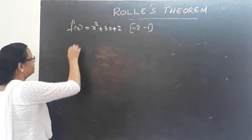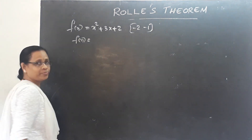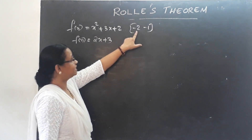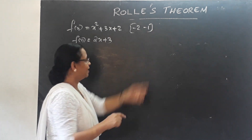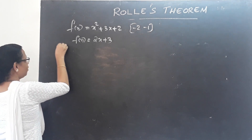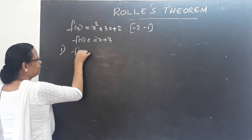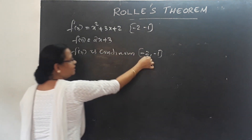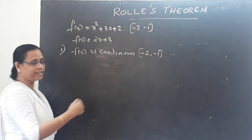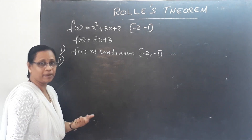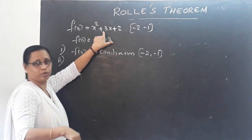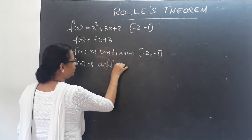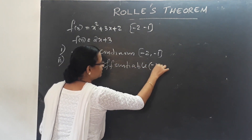For the second problem, we verify Rolle's Theorem. The function is a polynomial, so we can differentiate it as an ordinary function. F(x) is continuous on the closed interval [−2, −1] and differentiable on the open interval (−2, −1), since polynomial functions are both continuous and differentiable.